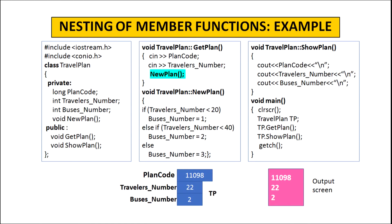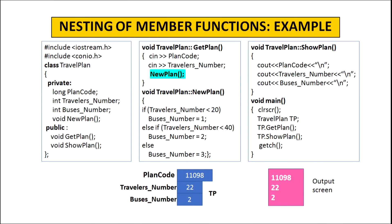In void main, we create an object TP of class travel plan. The moment we create the object, memory space is allocated to all three data members: plan code, traveler number and buses number. The statement TP dot get plan invokes the get plan function for object TP. Whatever we input in plan code and traveler number is stored in the data members of TP. Since traveler number is input as 22, new plan assigns buses number the value 2. Then TP dot show plan displays all three data member values as shown on the output screen.